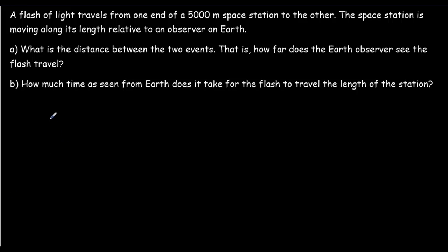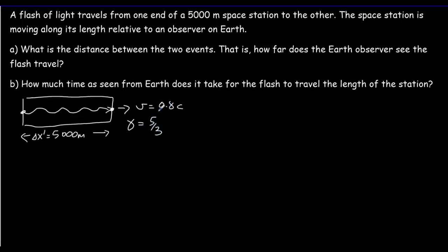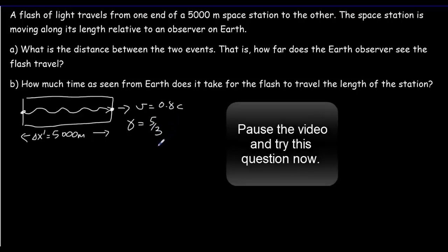Here's a practice problem with the Lorentz equations. We have a spaceship 5,000 meters long as seen from the spaceship — so the spaceship is our moving frame, making this our delta-x-primed. The two events are: a flash at one end of the spaceship, and it hitting the other end. The spaceship is moving at v = 0.8c, and plugging that in, gamma equals 5/3. Pause the video, try the question, then come back for the answer.